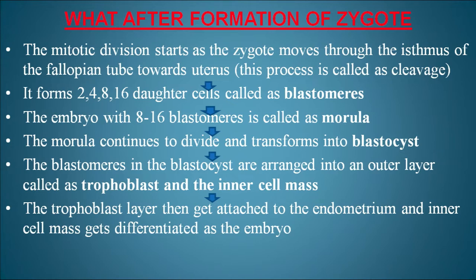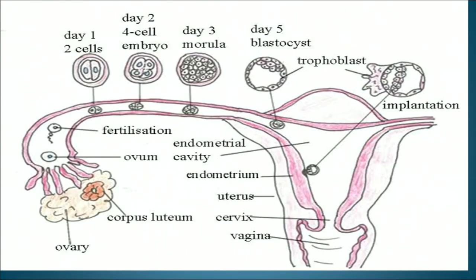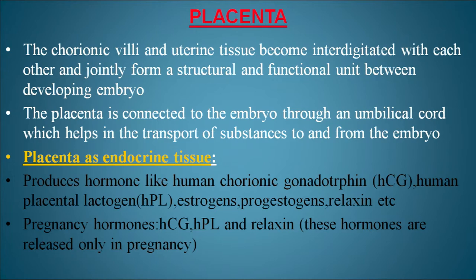The morula continues to divide and transform into a blastocyst. The blastomeres in the blastocyst are arranged into an outer layer called the trophoblast and an inner cell mass. The inner cell mass helps in making the different tissues of the body. The trophoblast layer attaches to the endometrium, and the inner cell mass differentiates as the embryo. In the diagram, day 1 shows a 2-cell embryo, day 2 a 4-cell embryo, day 3 an 8–16 cell morula, day 5 a blastocyst with trophoblast and inner cell mass, ultimately embedded in the endometrium.